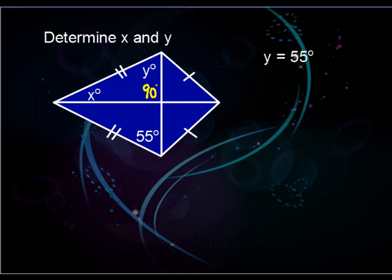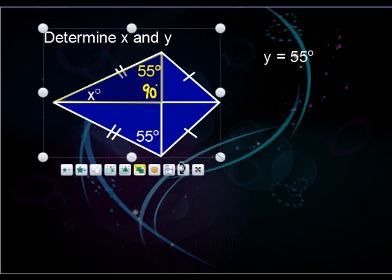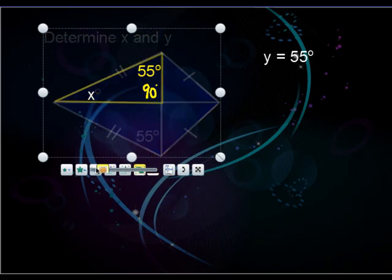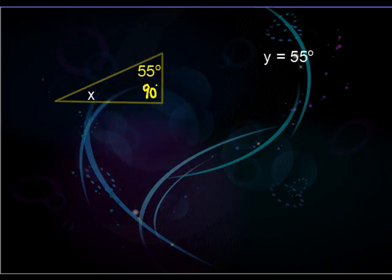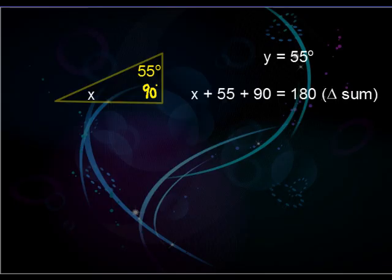Now let's focus on just one of those triangles. We already have two out of three angles, and recall that in a triangle the angles add up to 180 degrees. Go ahead and write that equation and solve it, and there you have your answer for x.